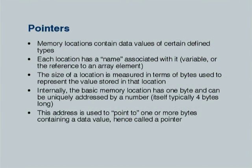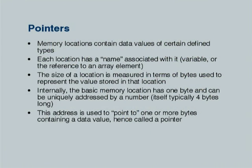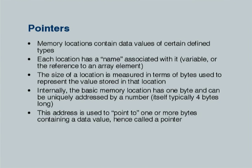This machine address is what is used to point to one or more bytes containing a data value. It can point to a 1-byte location if it contains a single character value, a 4-byte location if it contains an integer or float, or an 8-byte location if it contains a double precision floating point. Such an address which points to any one of these data types is naturally called a pointer.